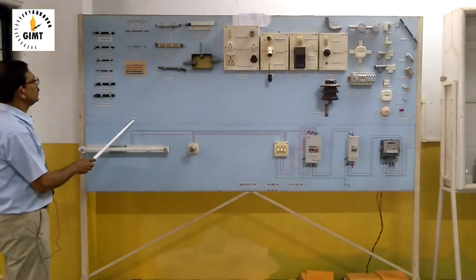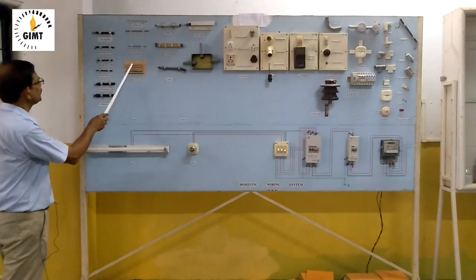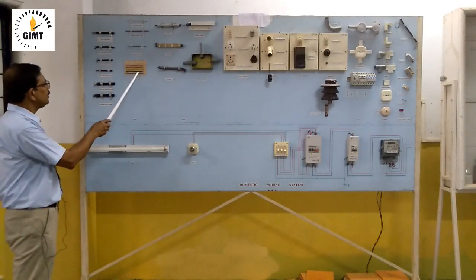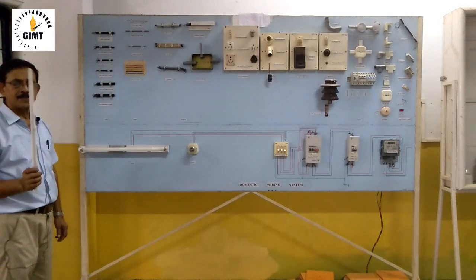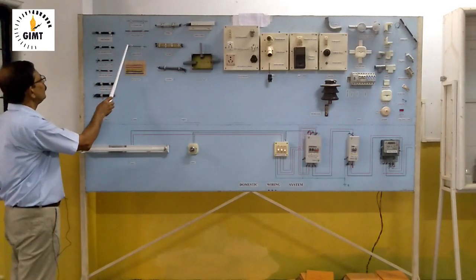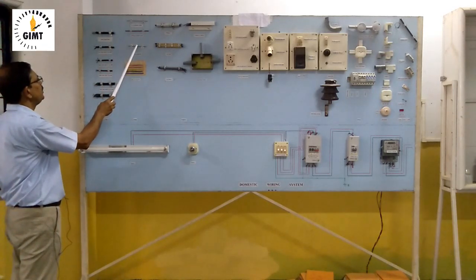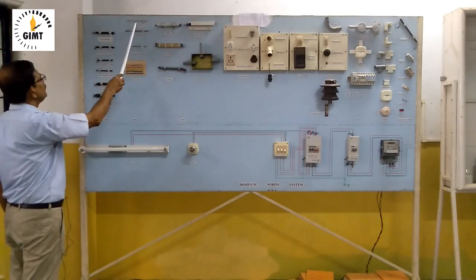Then come to wire, different types of wire. Here, this is written already multi-strand. Multi-strand means inside of this insulation part, there are multi-strands of wire. And here it is single-strand. Single-strand wire, only one wire is there inside of this insulator.